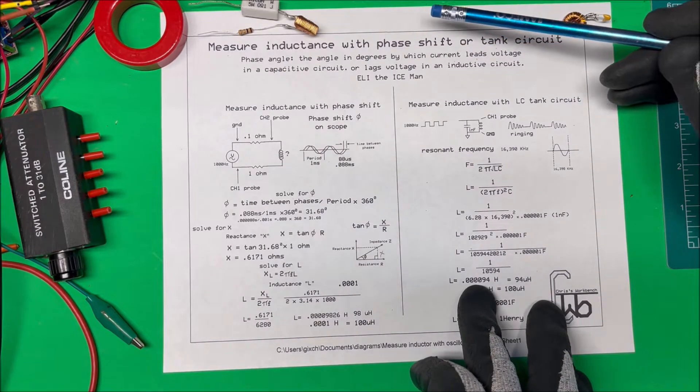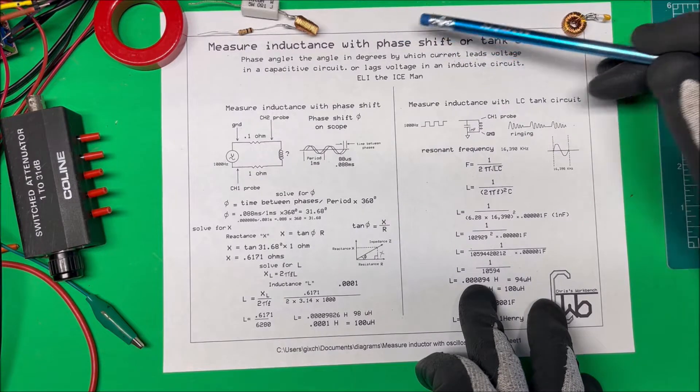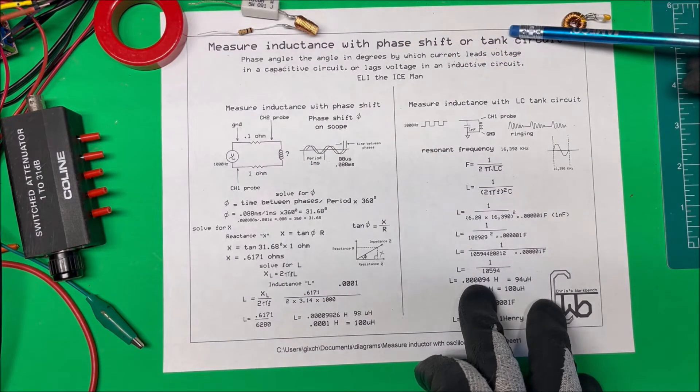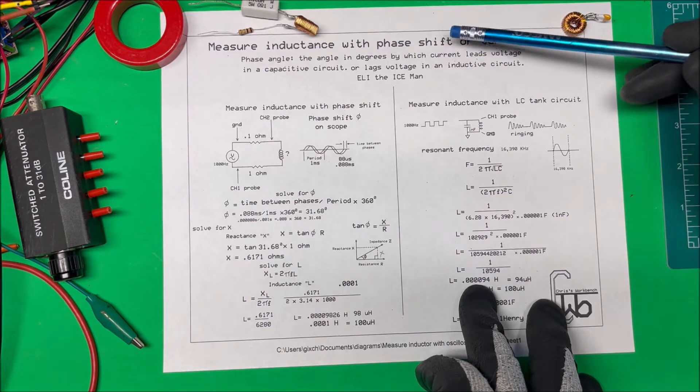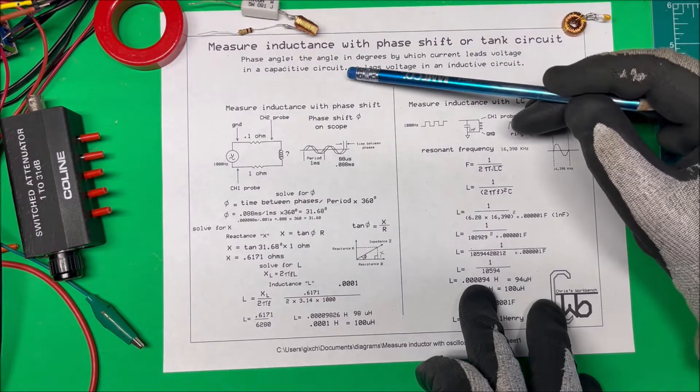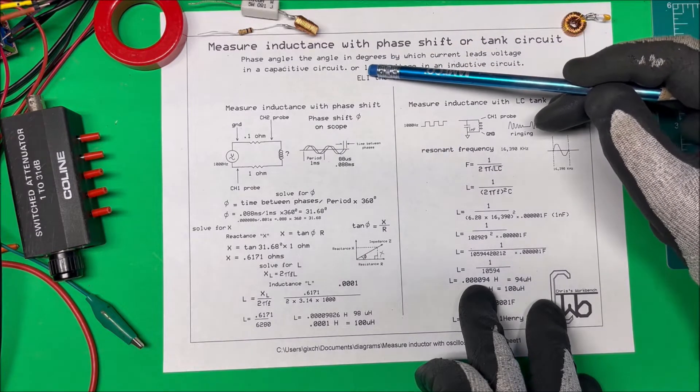We're going to try to measure an inductor with an oscilloscope in two different methods: phase shift and tank circuit. We'll try the phase shift first. The phase angle is the angle in degrees by which the current leads the voltage in a capacitive circuit or lags the voltage in an inductive circuit. We remember that by ELI the ICEman.